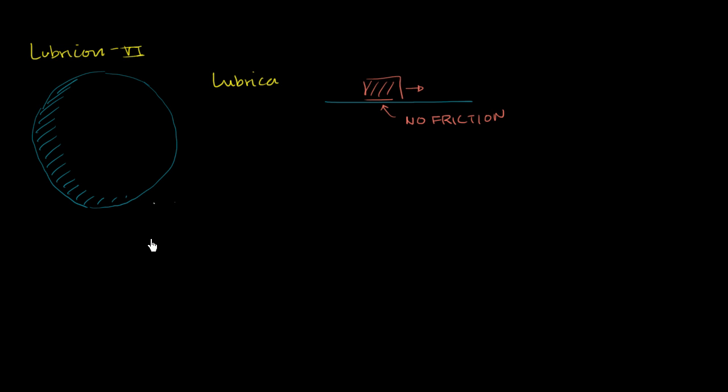And it's also an ancient planet. The star that it used to orbit around has long since died away. So it's just this lonely planet drifting in deep space without an atmosphere. The other thing we know about Lubricon 6 is that it is a perfect sphere.